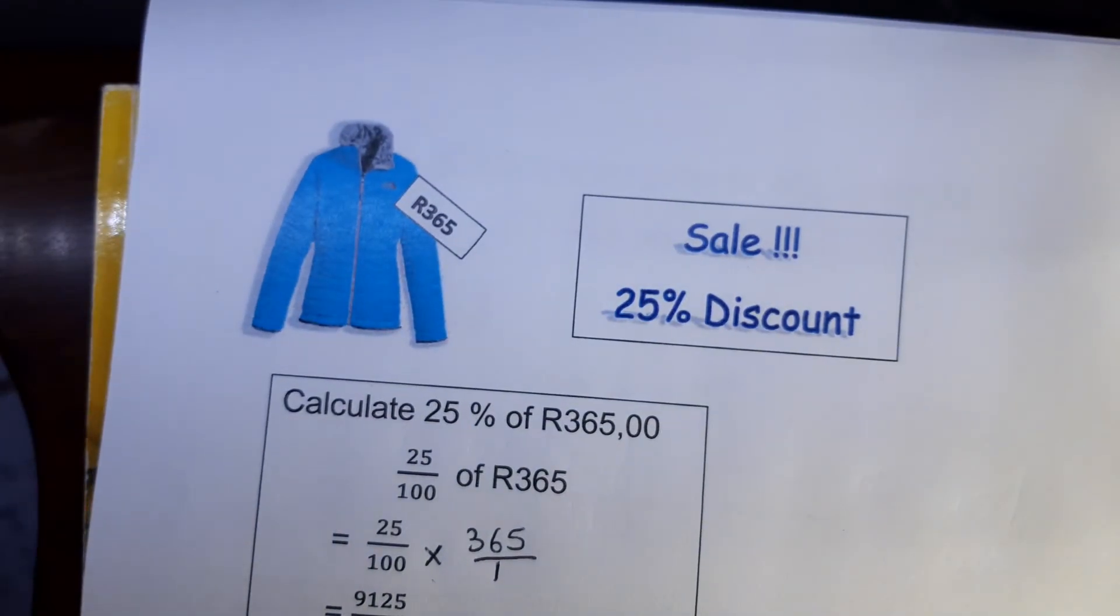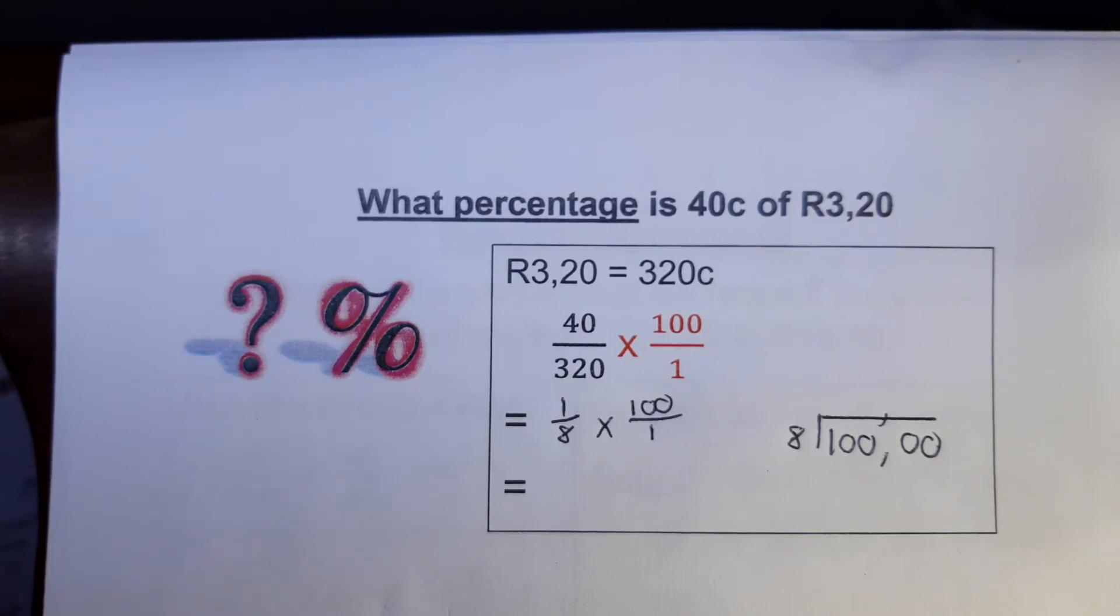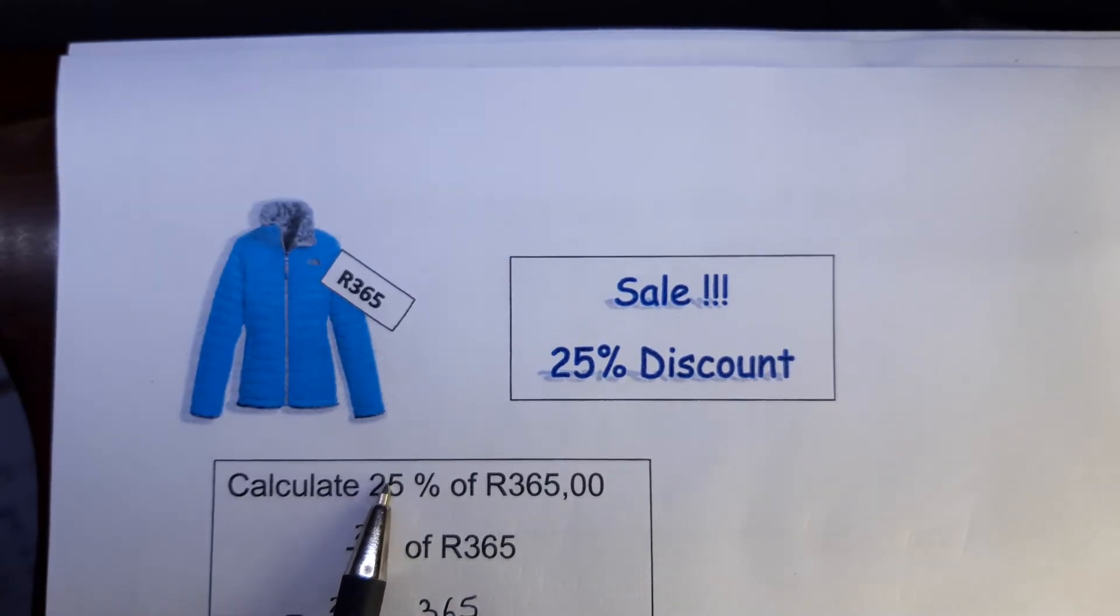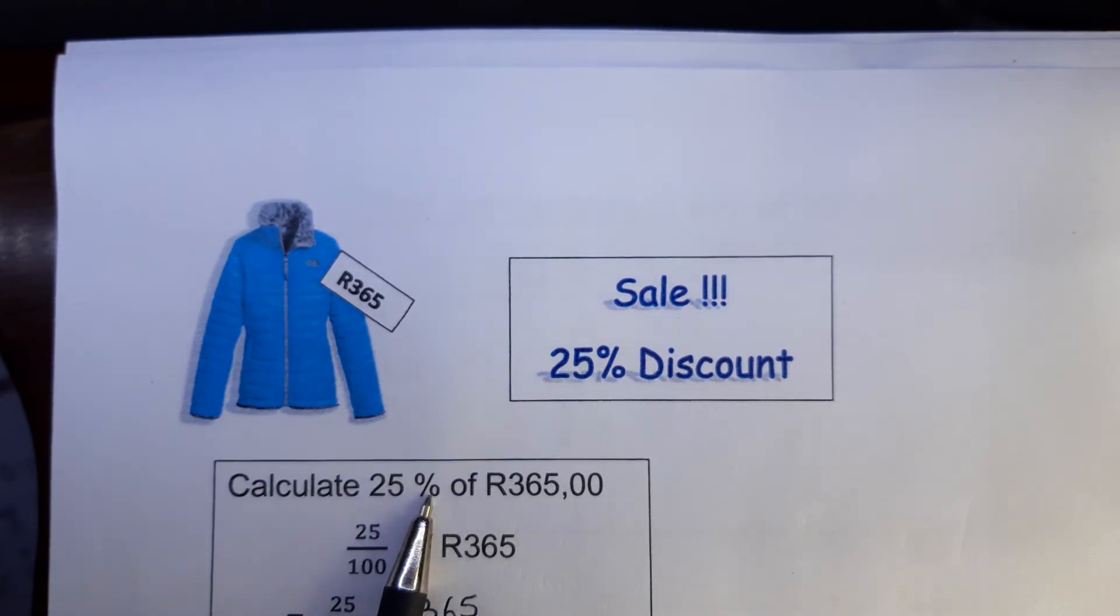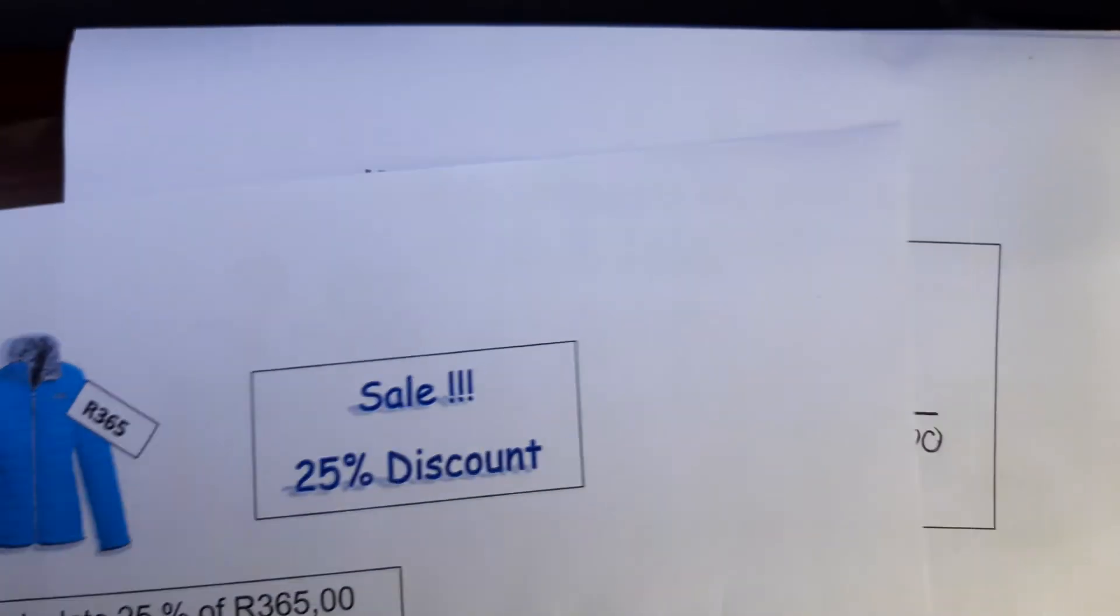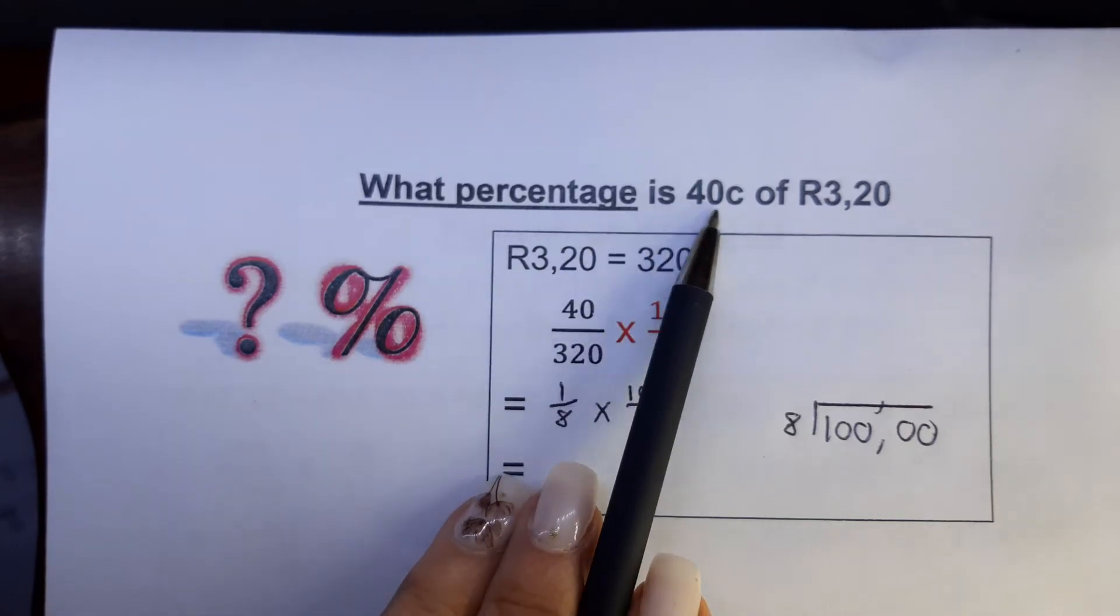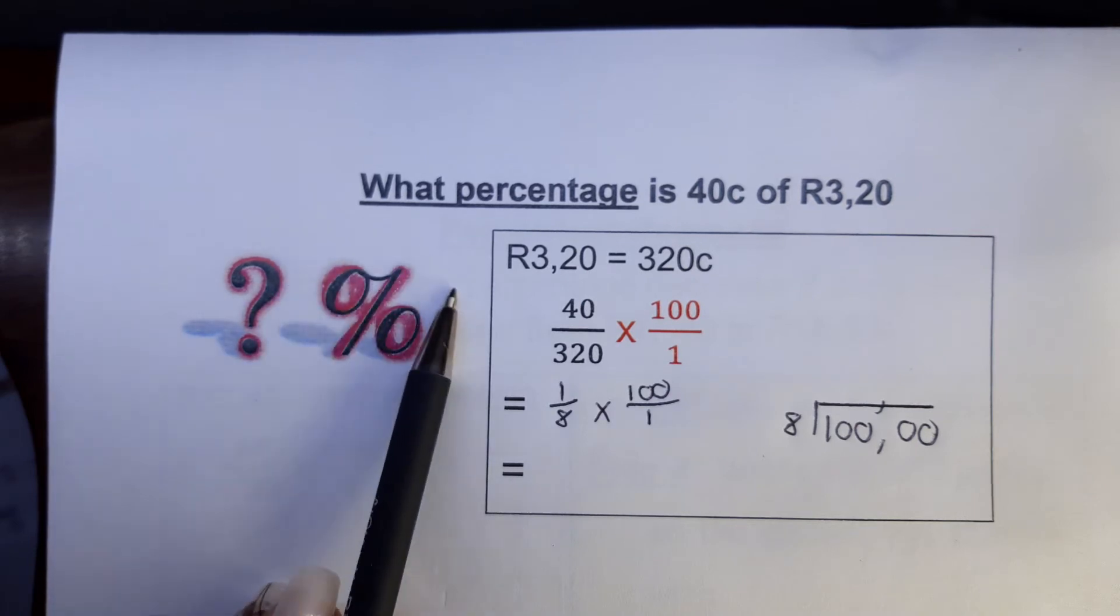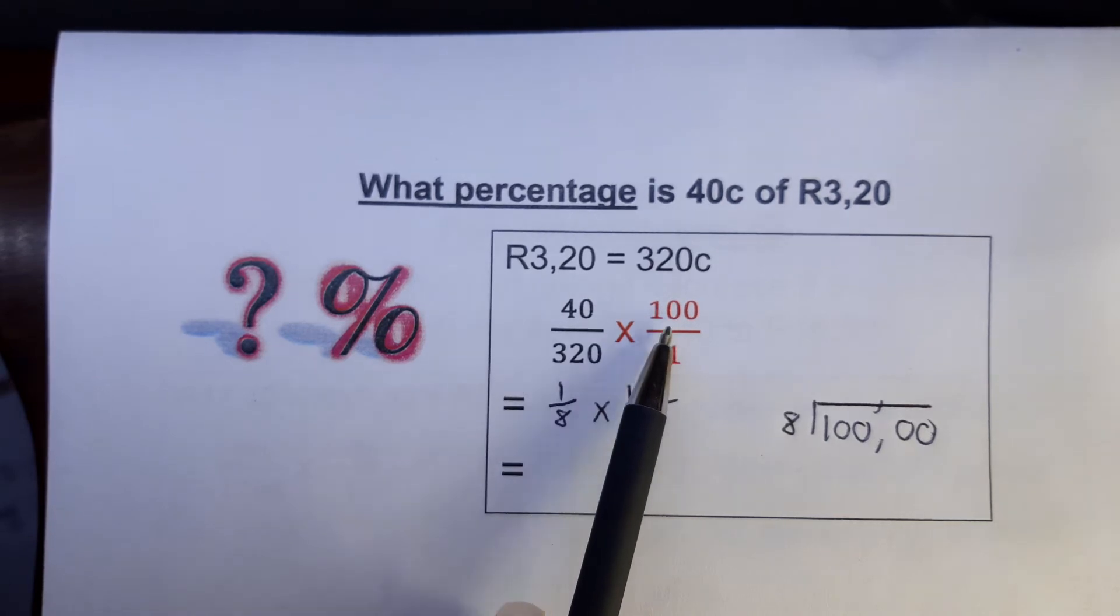When you have to calculate what percentage, at the previous question they asked you, just look at the difference. They give you a number, 25%. If there's a digit in front of the percentage, you write the 25 over 100, so you will divide by 100. But in this case, they just ask you, what percentage is 40 cents of 320? What percentage? So percentage doesn't have a digit in front of it, then you will multiply by 100 over 1.